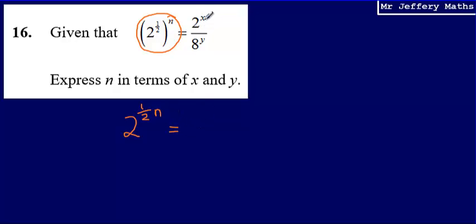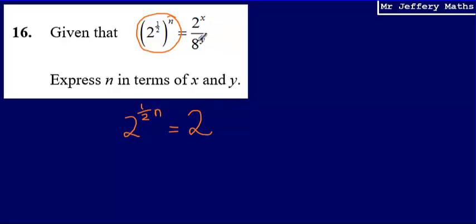Now what I've got here is 2 to the power of x over 8 to the power of y. If I can write this as a single power of 2, then I can say that the powers must be equal to each other. So if I can write this as 2 to the power of something, then half n will equal whatever that power is in terms of x and y. What I need to spot is that the base of 8 can be written as 2 to the power of 3.